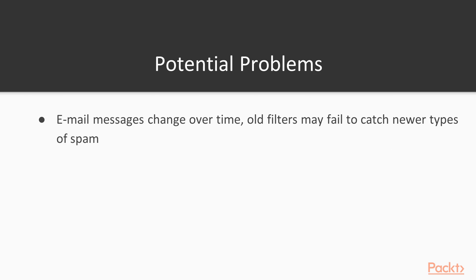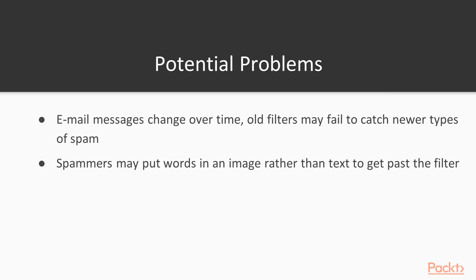Here are things to watch out for with spam detection systems. First, spam is context dependent. This means that a spam detection system is only as good as the data it's trained on. Systems trained on old data may fail to capture newer genres of spam and will need to be updated. A trick to get past a spam detection system is putting the message in embedded images. The filter will often ignore the image and see nothing wrong with the text, so the spam gets through.